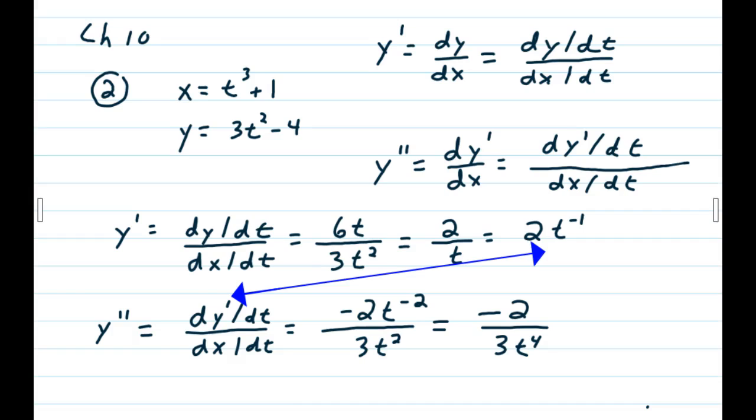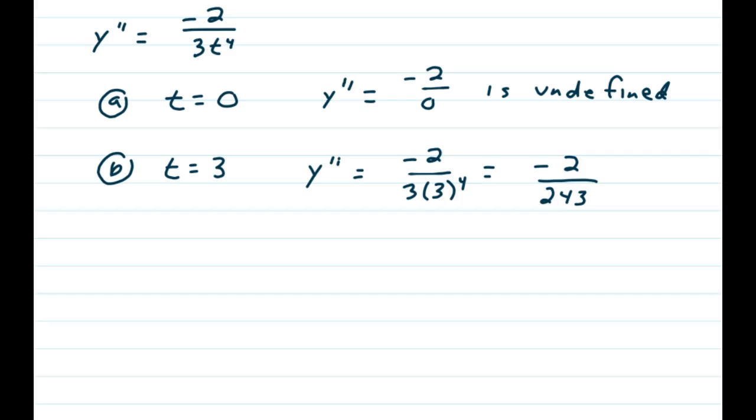Again, dx/dt is just going to be repeated at 3t squared. Simplifying that by taking t to the negative 2 down to the denominator, you get negative 2 over 3t to the fourth. So y double prime is equal to negative 2 over 3t to the fourth.